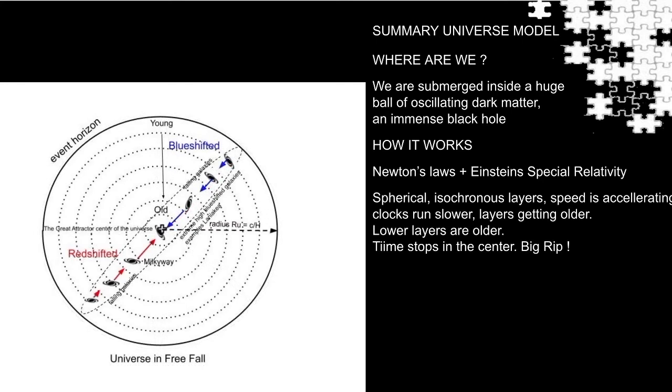Normal dark matter fall in spherical isochronous layers to the center. I call them isochronous layers because all clocks in each layer will run at the same rate, because they are falling with the same speed. Just applying Einstein's theory of special relativity.